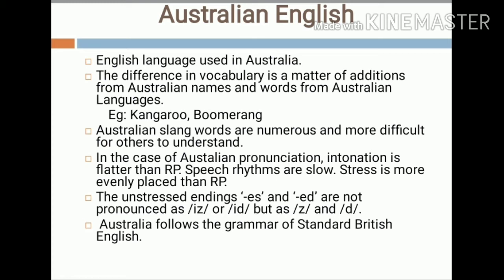For example, the words 'kangaroo' and 'boomerang' are coinages from Australia into English. Australian slang words are numerous but are more difficult for others to understand. In the case of Australian pronunciation, intonation is flatter than RP, speech rhythms are slow, and stress is more evenly placed than RP. The unstressed endings of -ES and -ED are not pronounced as 'is' or 'it' as in British English, but as 'z' and 'd.'